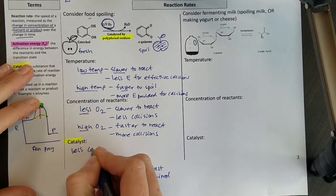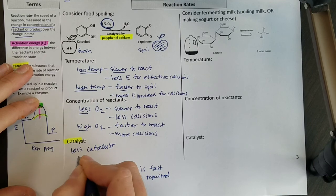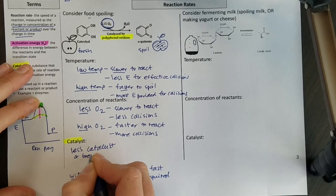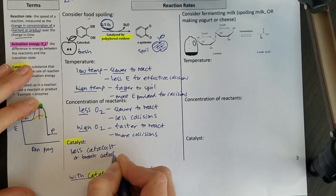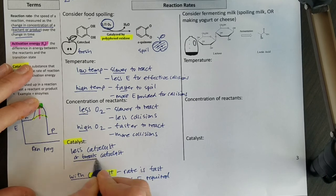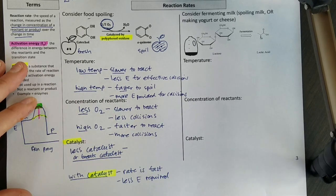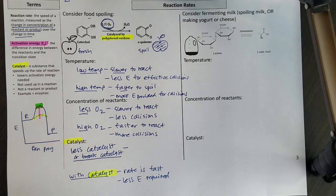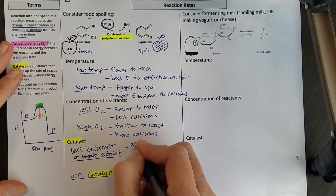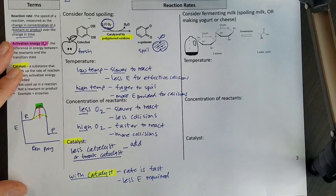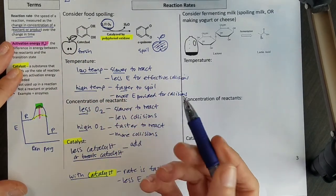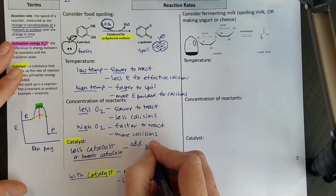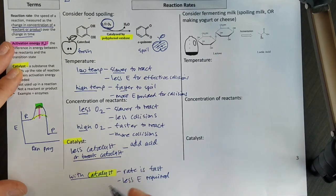We can either take away the catalyst, or we can also break the catalyst, and we'll learn more about that later in the semester. But if we can somehow harm that catalyst, then our food won't spoil so quickly. So some of the things we do to keep our food from spoiling quickly, you can put some lemon juice on your fruit or on your avocados, and in doing that you're adding acid.